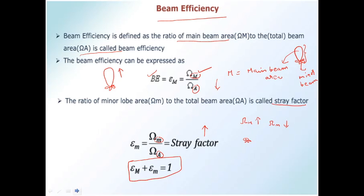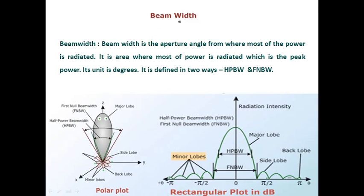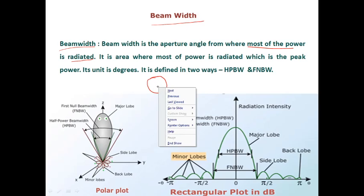The next parameter is beam width, which is a very important parameter for antennas, because based on practical application requirements this beam width needs to be calculated. For example, mobile applications, satellite applications, and communication applications specify required beam widths, and accordingly we select particular antennas. Beam width is defined as the aperture angle from where most of the power is radiated — aperture meaning an opening angle from where most of the power is radiated.